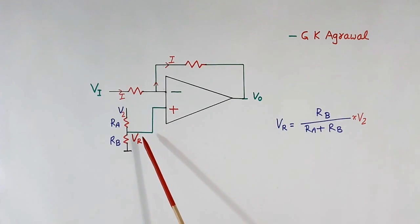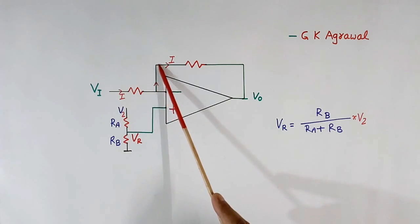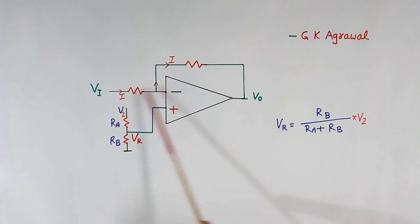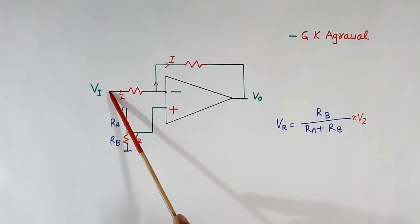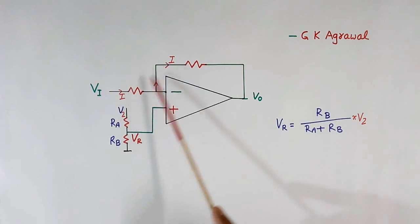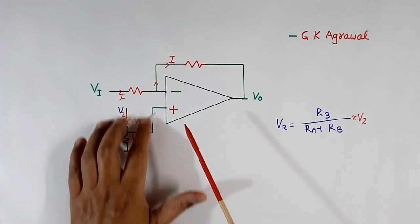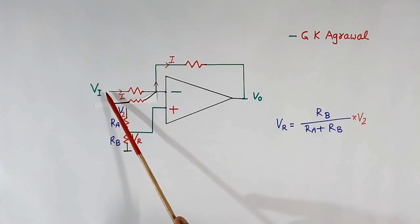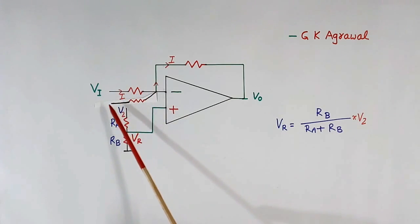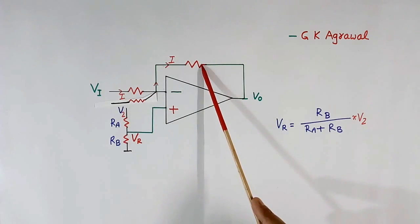Second rule is: current flowing into the input resistor will be equal to current flowing into the feedback resistor. If this is a single input, this current and that current are equal. But if there are 2 inputs, then the current in the first resistor and the current in the second resistor, totalled together, will be equal to the feedback current.